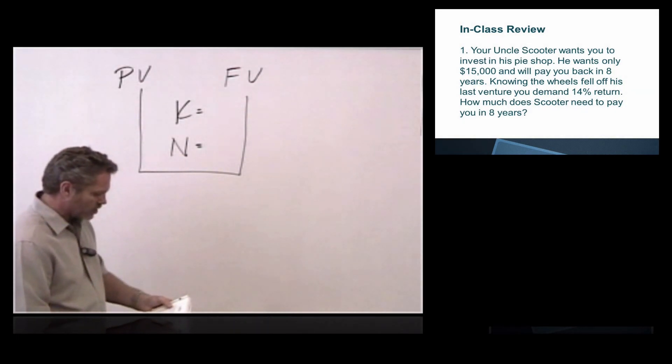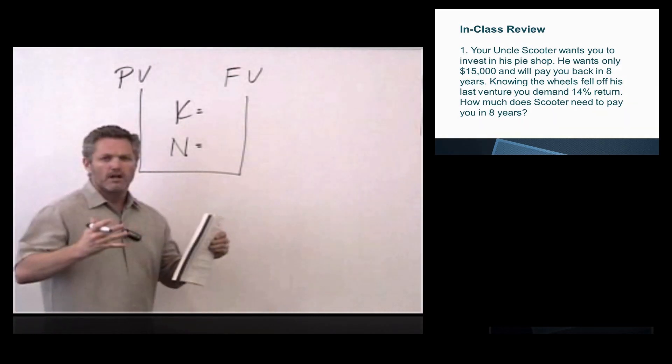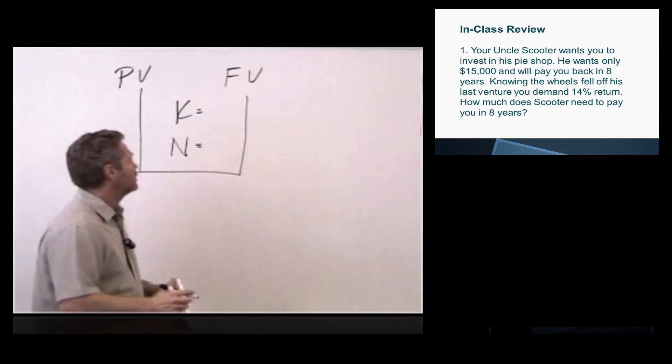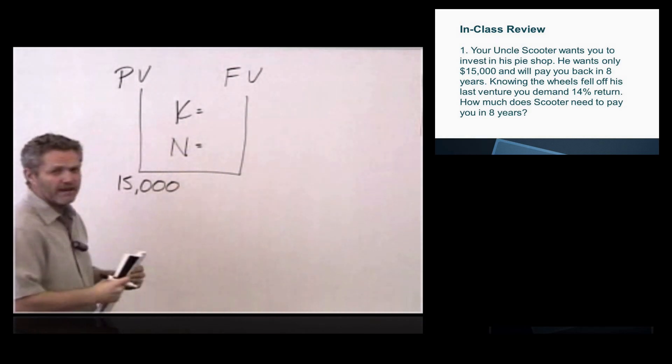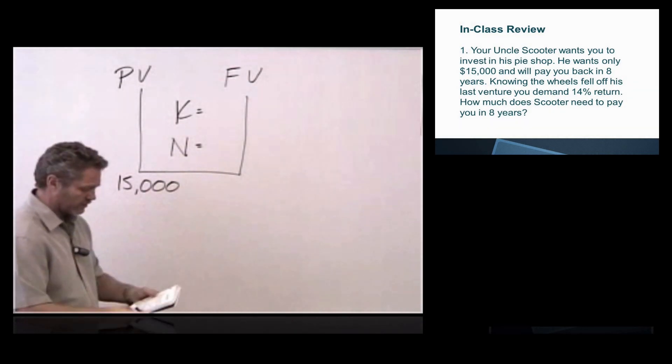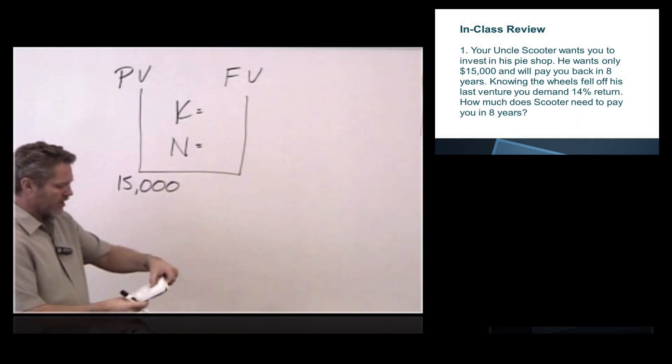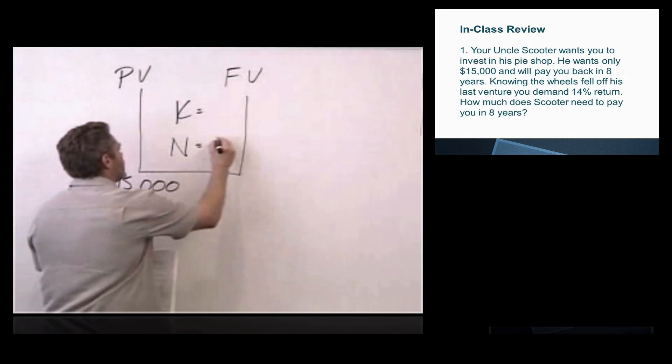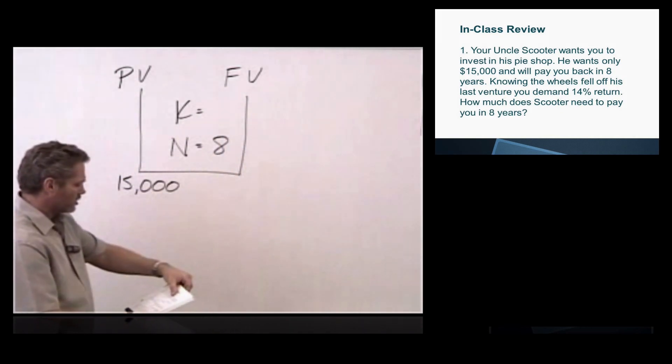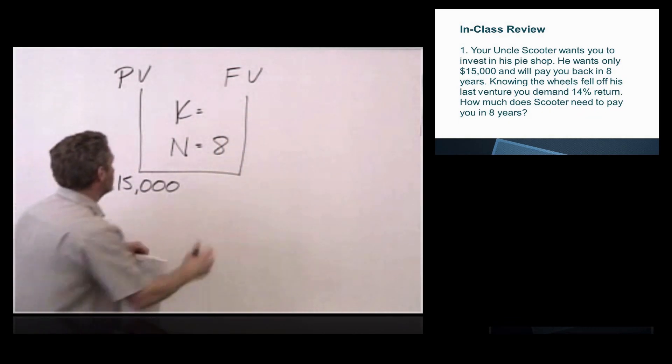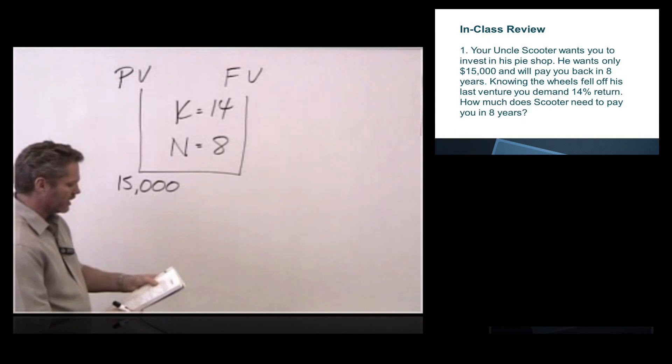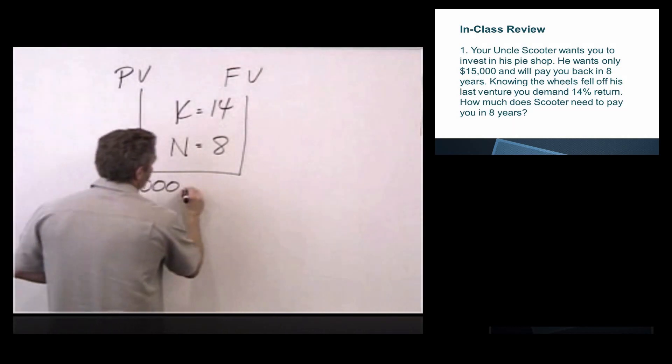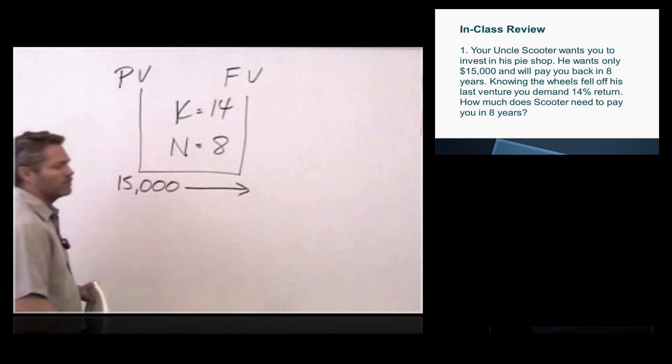If we go back to the question, he wants to open his pie shop, he wants only $15,000. He wants the $15,000 today, so I'm going to place $15,000 here under present value. He wants to pay you back in eight years, so N is 8. Since the wheels fell off his last venture, K equals 14. The question is, how much does he need to pay you back in eight years? That's clearly future value. How much in the future does he need to pay you back?